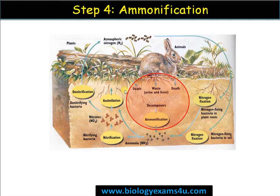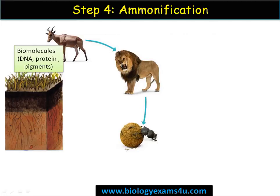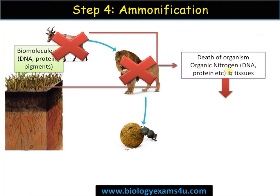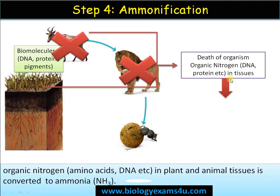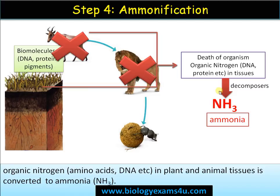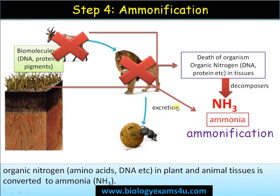The fourth step is ammonification. The biomolecules synthesized in plants and animals — on death and decay — have their organic nitrogen or nitrogen incorporated in biomolecules like DNA and proteins decomposed by decomposers to give rise to ammonia. This conversion of organic nitrogen to ammonia by decomposers is called ammonification. This ammonia is returned to the soil. Another method by which ammonia is released into the soil is through the excretion of organisms.